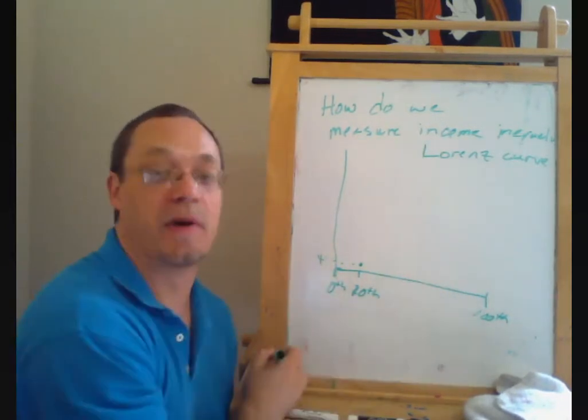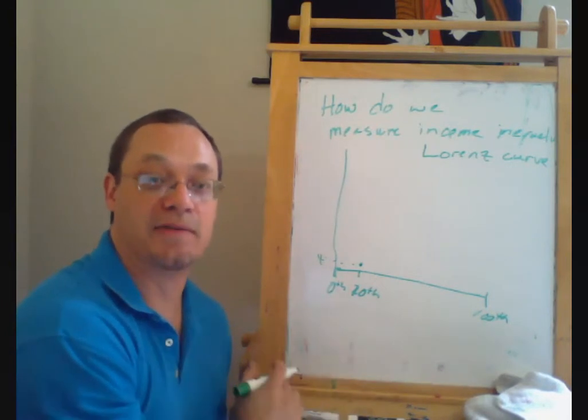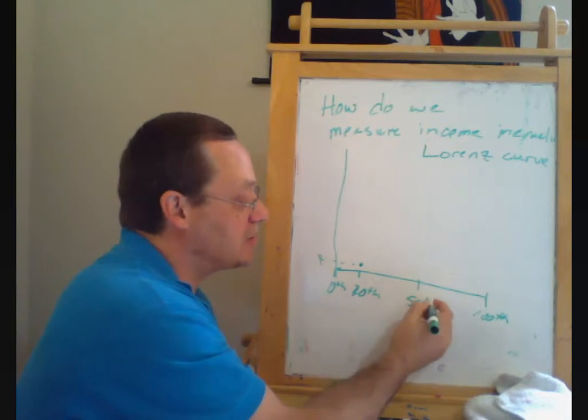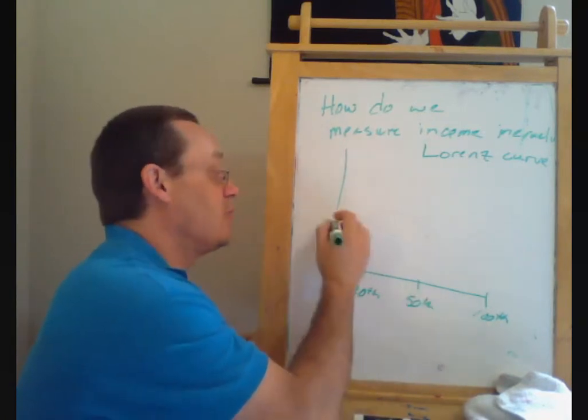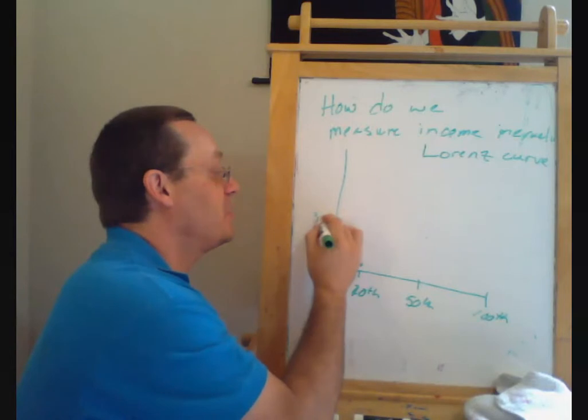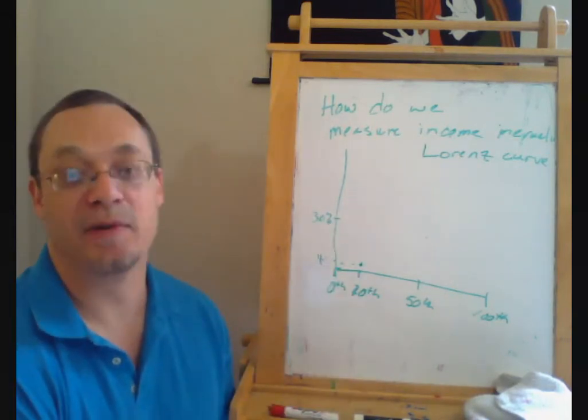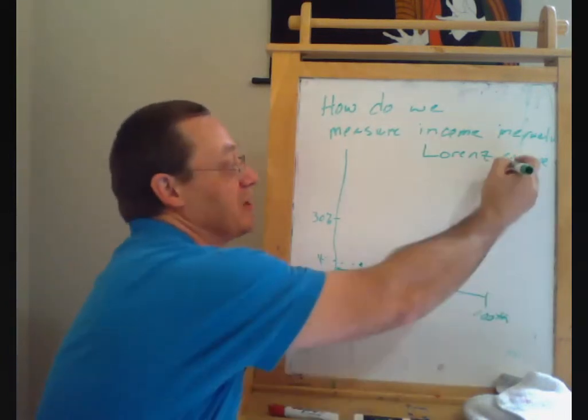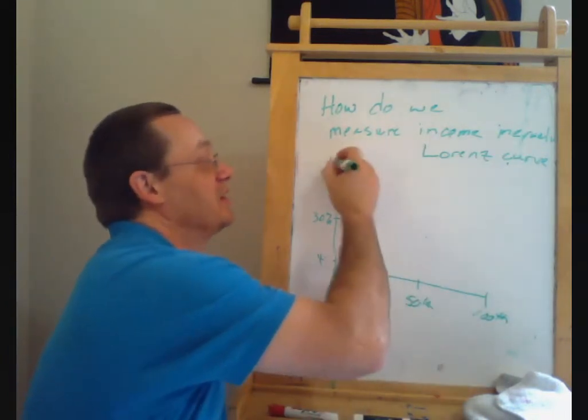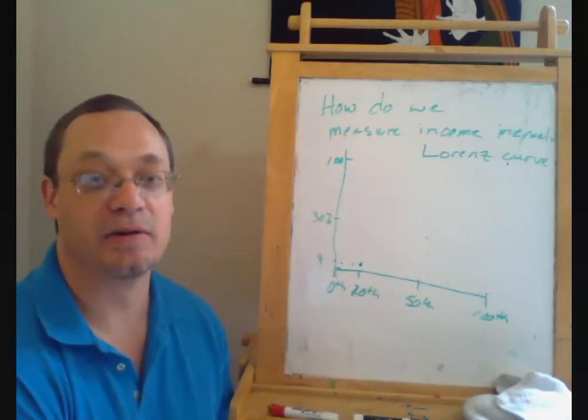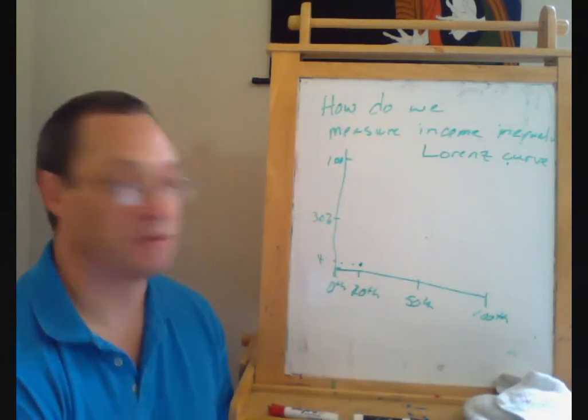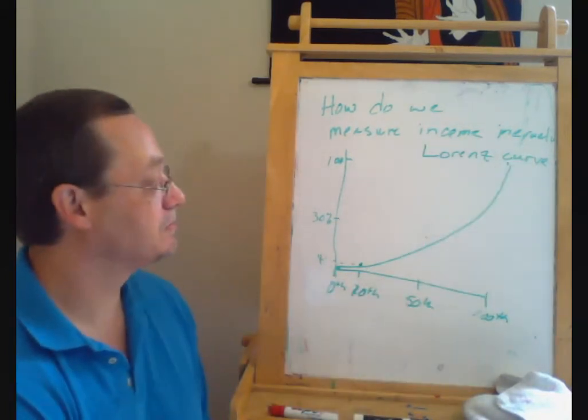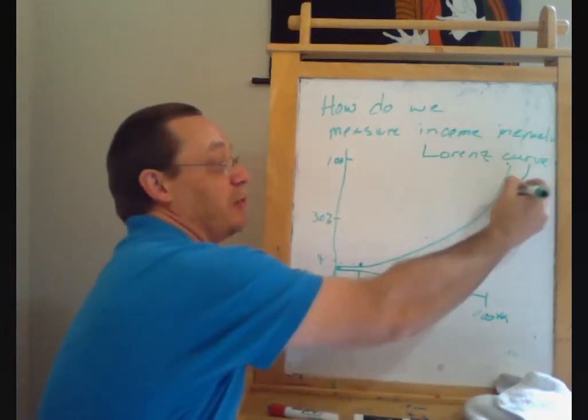And you can see, as we start going farther this way, we're going to get to a higher and higher level of national income. For everyone 50th percent or below, maybe we have 30% of national income is being earned by everyone in the bottom half. And once we get to the 100th percentile, then by definition, all of national income must have been earned by someone in the 100th percentile or below. So we're going to have a curve that looks something like this. So that's the Lorenz curve.